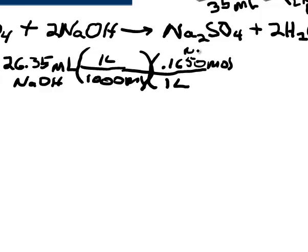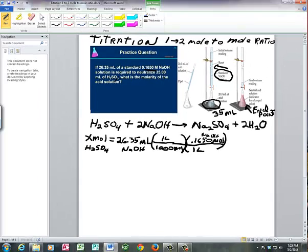Remember, this is NaOH per 1 liter. That's the molarity of the sodium hydroxide. The next thing we're going to do is use the mole to mole ratio to figure out how many moles of H2SO4 we have.